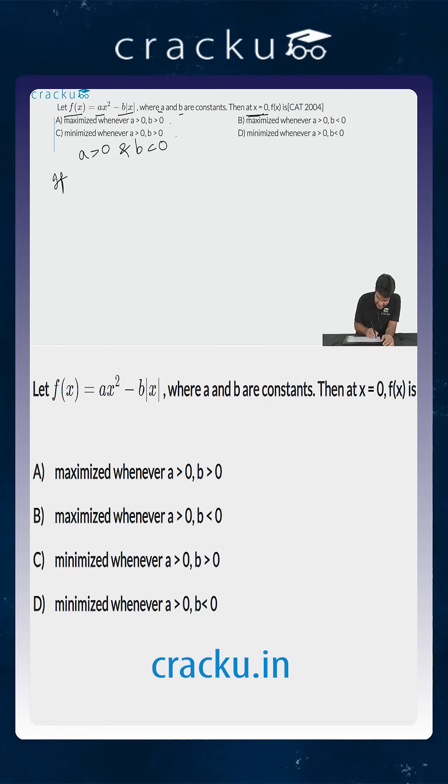Now if x is greater than 0, f(x) becomes ax² minus bx. Now b is less than 0, so minus bx is actually positive because x is positive, b is negative, and minus times minus is positive. So the whole term ax² minus bx is greater than 0.